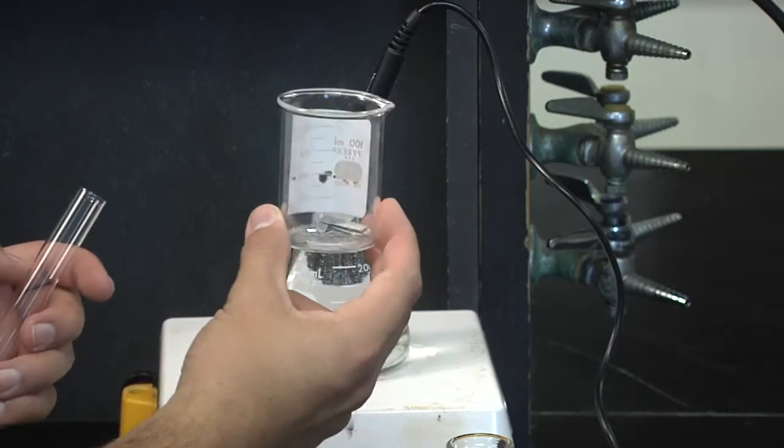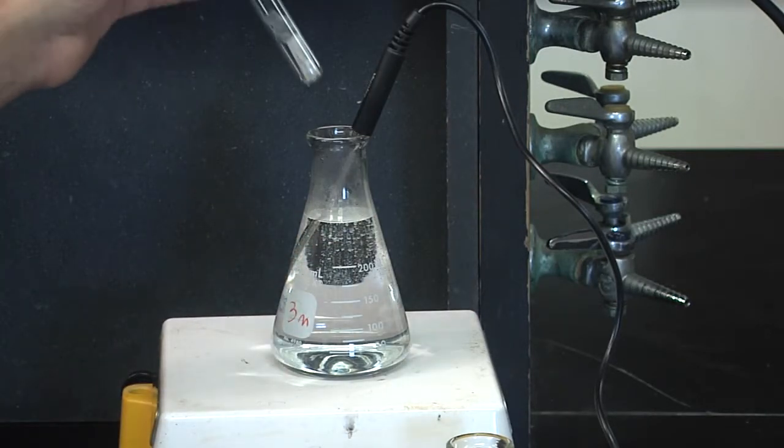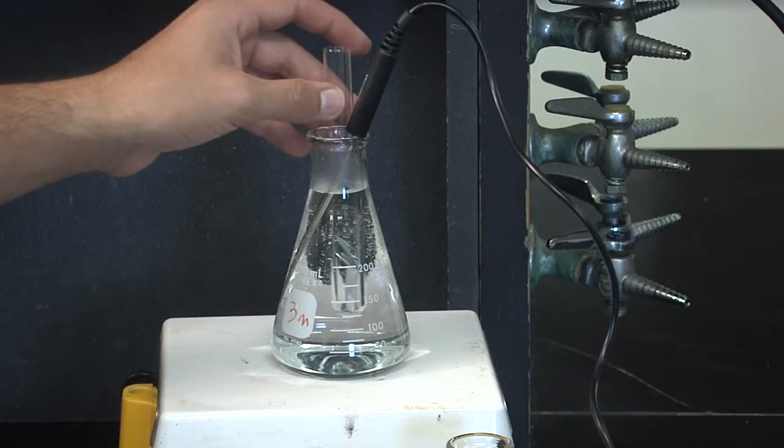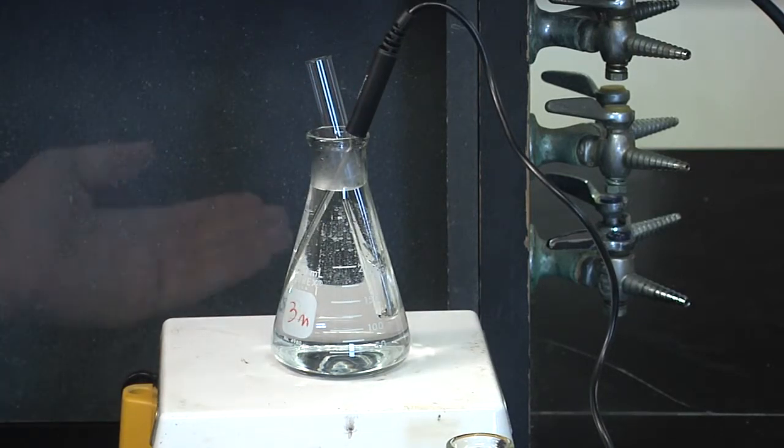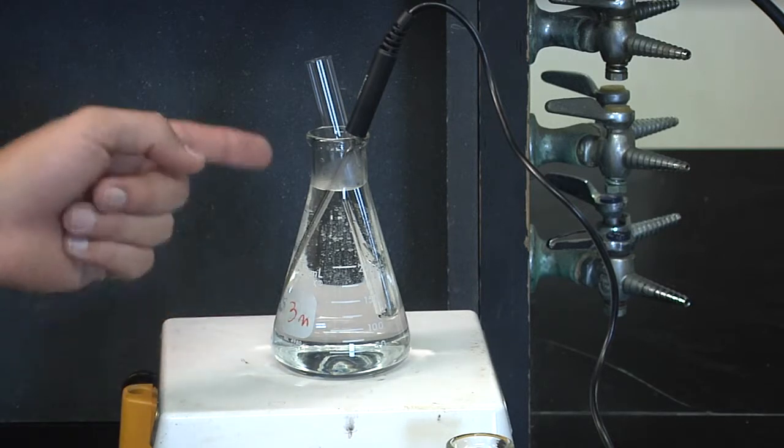We will take approximately 30 grams of our metal pellets, place them in a test tube, and place them in boiling water, or water at our desired temperature. Clearly, here our water is not boiling, but you will want your water to be boiling.